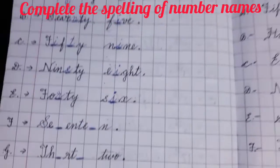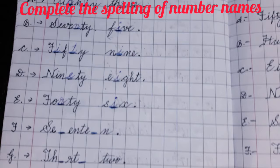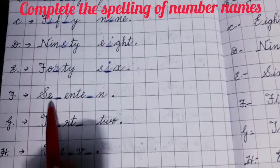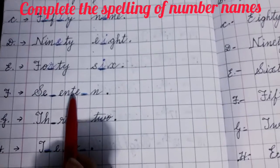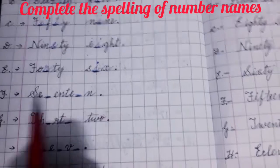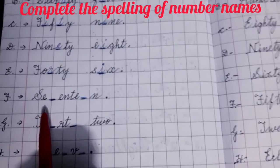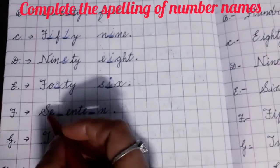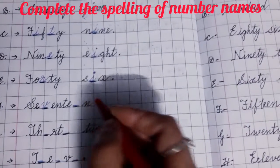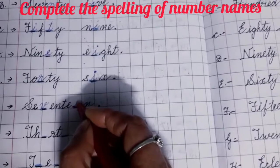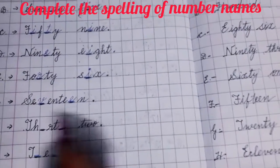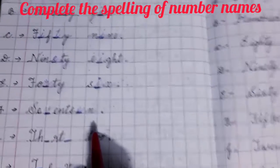I hope you are learning all the spellings from 1 to 100. Write F, put an arrow. Write S E blank space E N T E blank space N. Which spelling is this? This is the spelling of 17 — SEVENTEEN. S E is already written, so you will fill in V. E N T E is written, what you will fill here? One more E — S E V E N T E E N — 17.